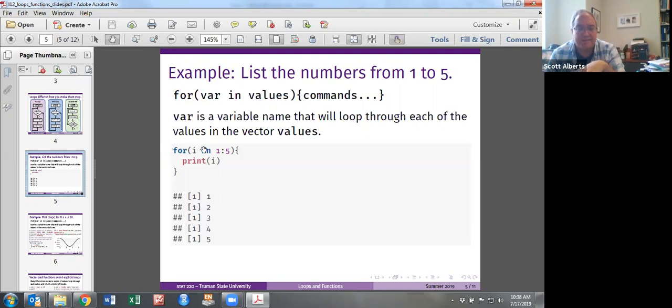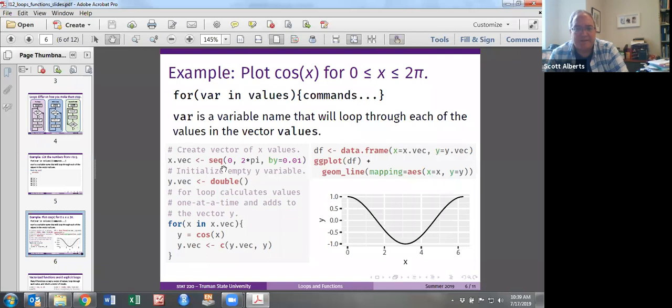If we did for i in 1 to 5, remember the colon is 1 through, and then just print that, it lists our numbers 1 to 5. That's a pretty boring example. A more interesting one might be if we make a sequence like we did before. So x vec is just an x vector. It starts at 0 and goes up to 2 pi by 0.01. Then we make a y vec. One of the weird things in coding is that sometimes you have to make an empty variable so that you can use it later.